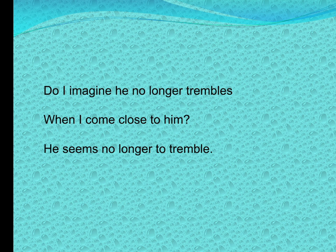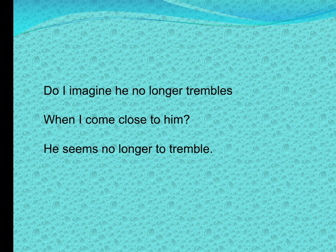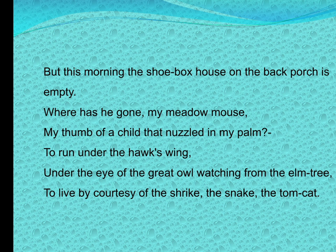The poet says: 'Do I imagine he no longer trembles? When I come close to him, he seems no longer to tremble.' The speaker assumes that he has offered sufficient protection and comfort, and feels that the mouse has settled comfortably and is no longer afraid of him. He feels that the mouse has developed a better kind of relationship with him and has adapted well in his new home, no longer trembling when the speaker approaches.